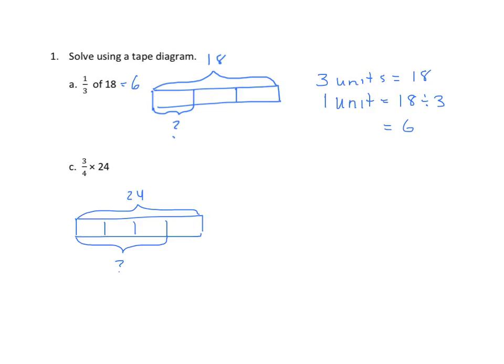So again, we'll start with four units. If we count these, we have four units for a total of 24. Four units equals 24. One unit equals 24 divided by four, and 24 divided by four is six.